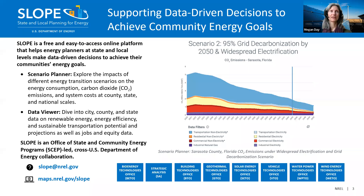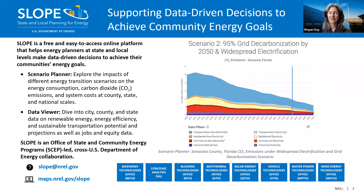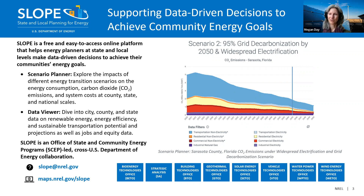We're trying to help energy planners like yourselves make data-driven decisions to achieve energy goals. There are two different components on SLOPE. One is the scenario planner, where you can explore the impacts of different energy transition scenarios on energy consumption, emissions, and costs at county, state, and national scales. You can download visualizations and data sets for use in analysis, outreach, grant proposals, and more. The other component is the data viewer, which has over 40 different data sets at city, county, state, and census tract level on renewable energy, energy efficiency, sustainable transportation, jobs, equity, and the built environment.